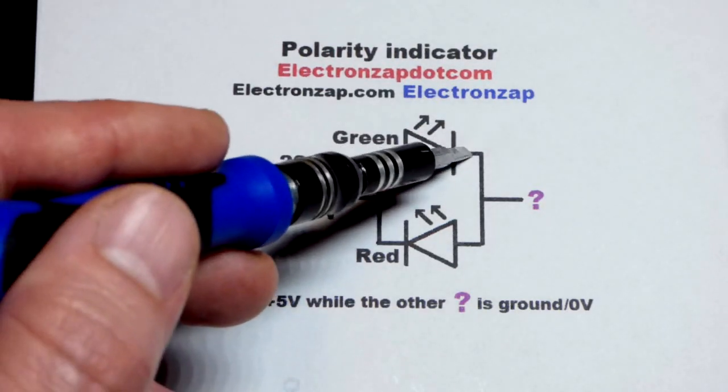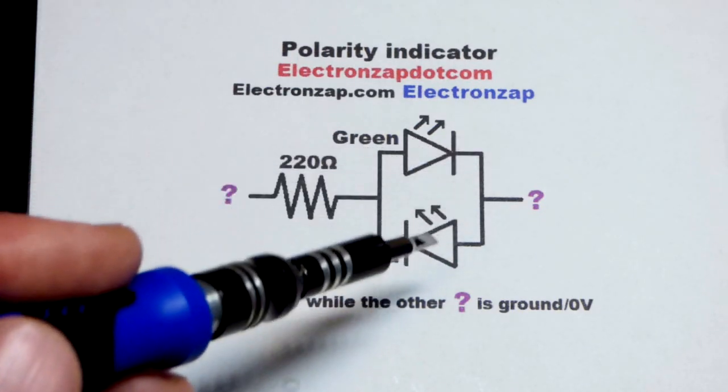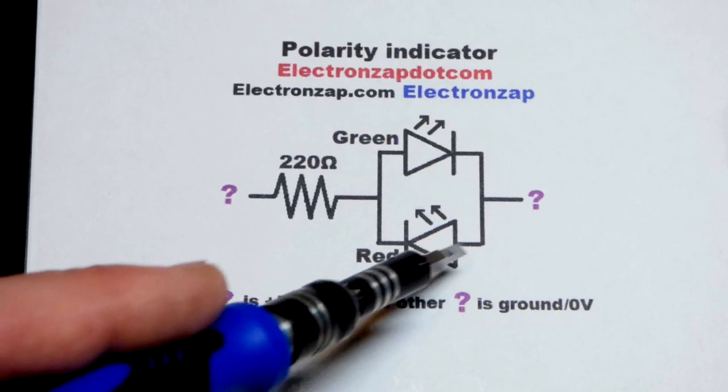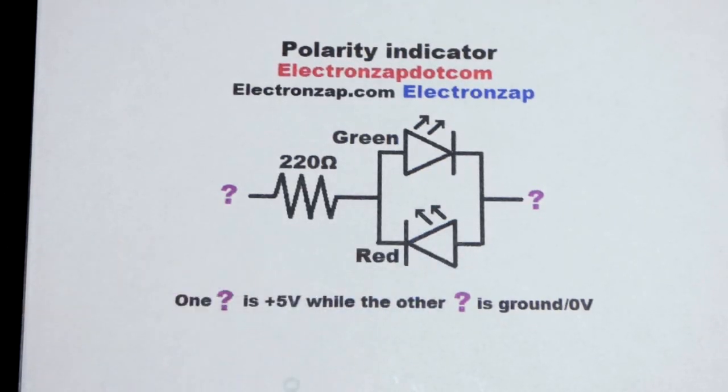The anode needs to be more positive than the cathode by about 3 volts for the green LED. I mean the red LED. The anode needs to be more positive than the cathode by about 2 volts. It takes a little less voltage before it will start conducting.